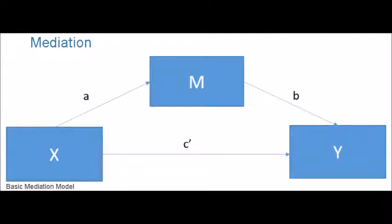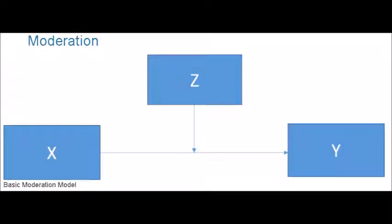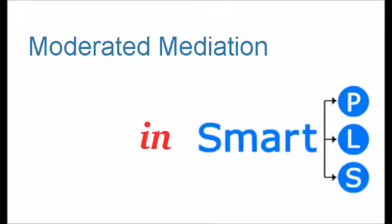Here you can see moderation. In this case, X is predicting Y, whereas another variable called the moderator variable Z is intervening in the relationship between X and Y — meaning it is controlling the strength and/or direction of the effect between X and Y. In engineering terms, we call these effects a signal; the moderator is controlling the signal between X and Y. This is called moderation.